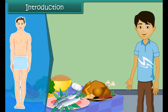We get our food from both plants and animals. Food has to be produced on a large scale to meet everyone's requirements. In this module, we will discuss crop production and its management for the distribution of food.